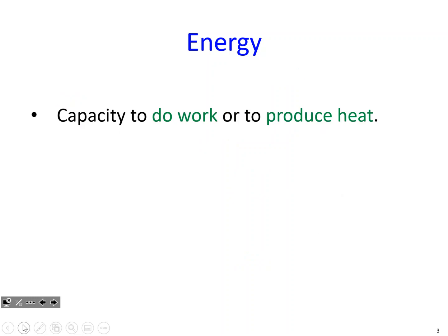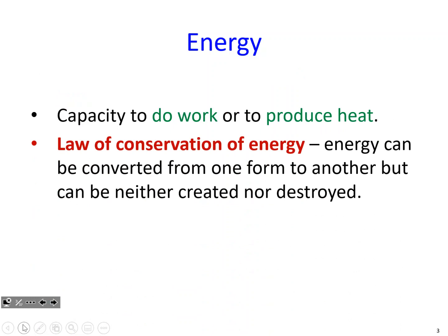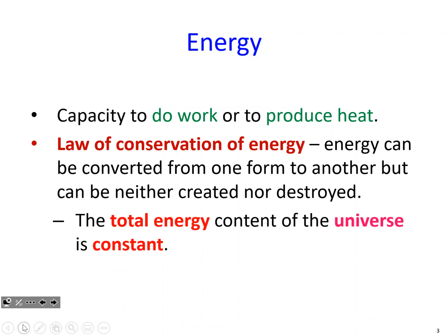The capacity to do work or produce heat — we also must abide by the law of conservation of energy. Energy can be converted from one form to another, but it is neither created nor destroyed. This is due to the fact that the total energy content of the universe is constant. The total energy in the universe can change forms, but it's not created nor destroyed — it just exists. The main type of energy for this unit is heat transfer, thermal energy.